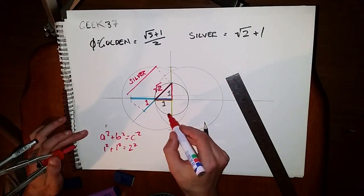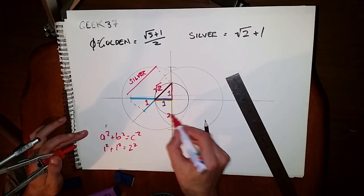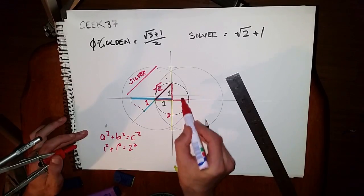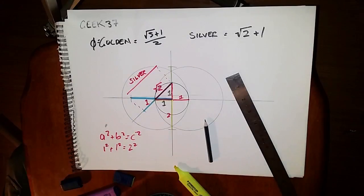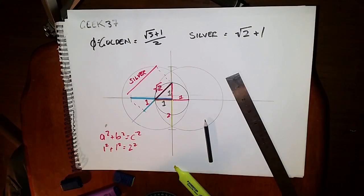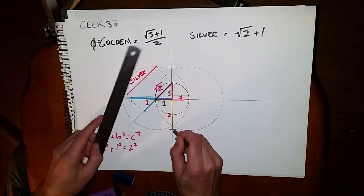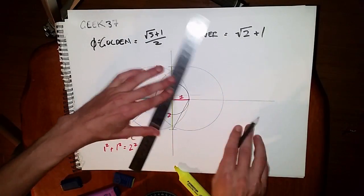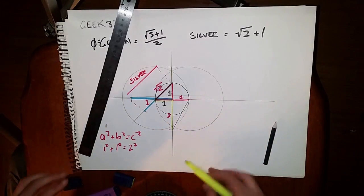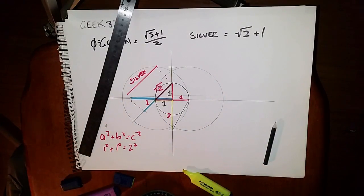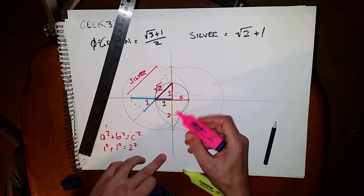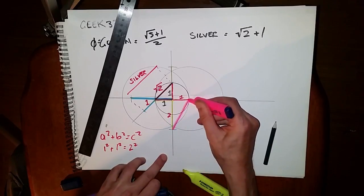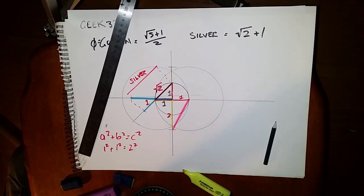Again Pythagorean theorem, so if this portion here is two and we know there is one, one, therefore from here to there we create a triangle. And so we want to know how long is this portion, the hypotenuse of this particular triangle. And again Pythagorean theorem.